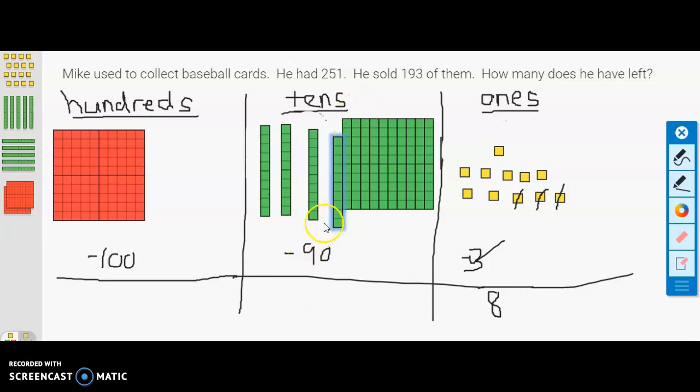Now we can subtract 90. In fact, you can see that if we were to cross out nine of these, that would subtract them, then we would just have this one right here. So we'll add this one. We have to subtract the 90. We have 10, 20, 30, 40, 50. So let's record that.